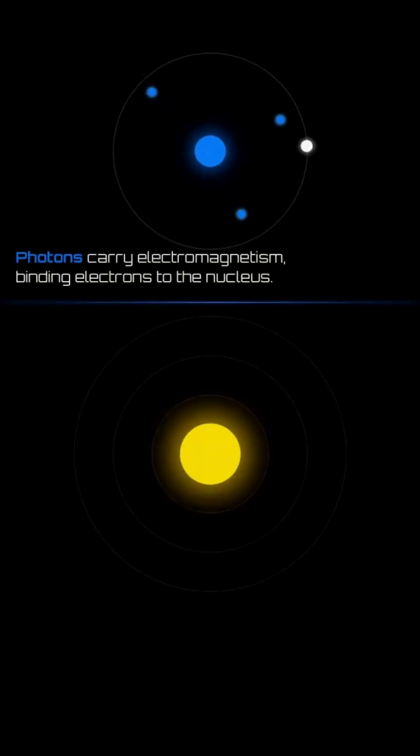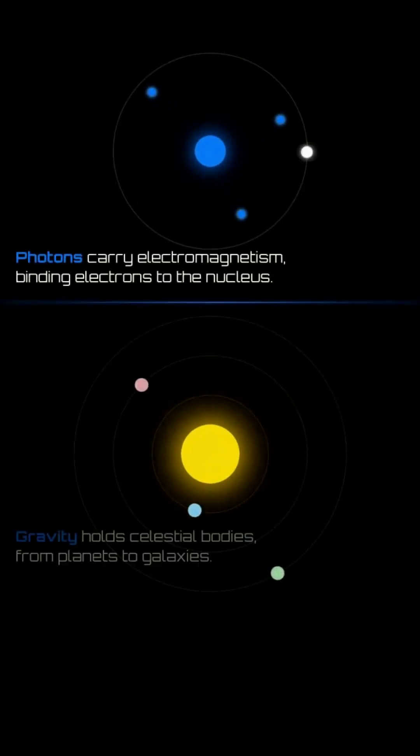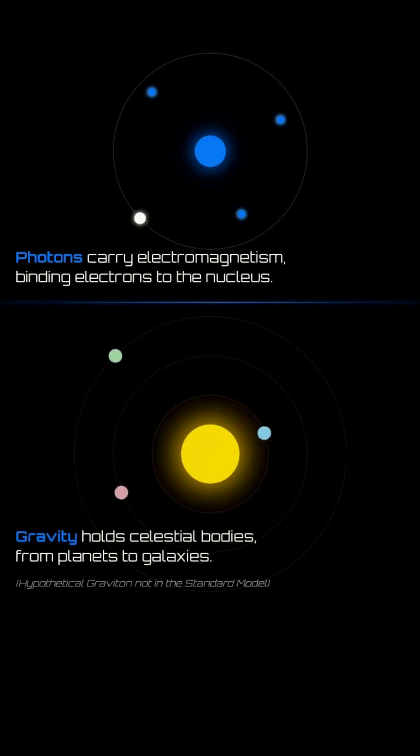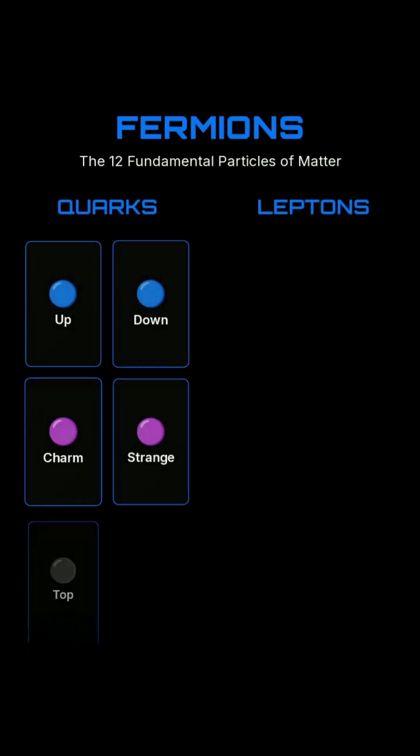Photons carry electromagnetism, binding electrons to the nucleus. Gravity, not fully in the standard model, holds celestial bodies.